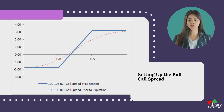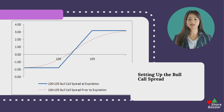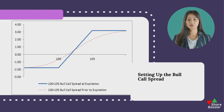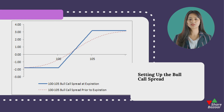This video discusses the bull call spread strategy, which is an options trading tactic where one call option is bought and another is sold at a higher strike price. This strategy allows for potential profit from a moderate stock price increase while limiting risk, making it useful for cautious investors who are optimistic about future stock price rises.